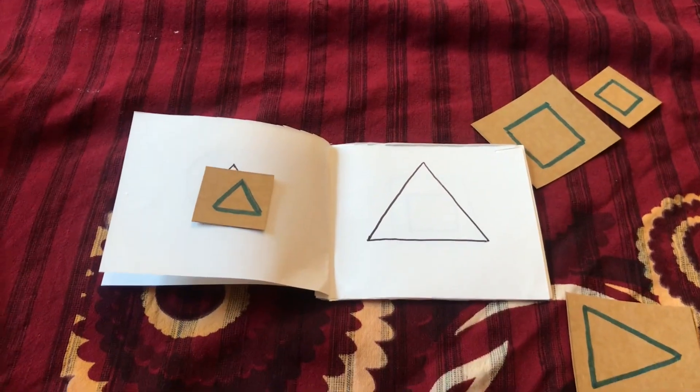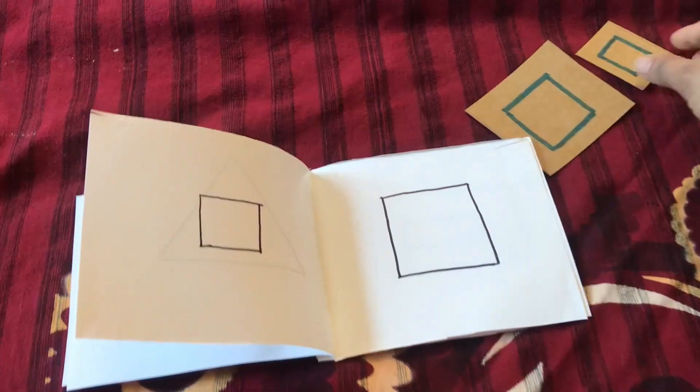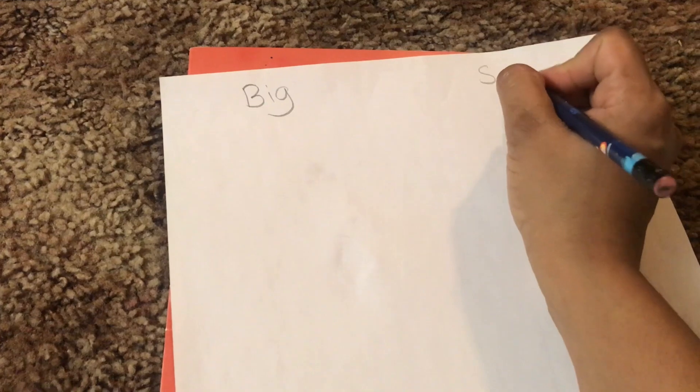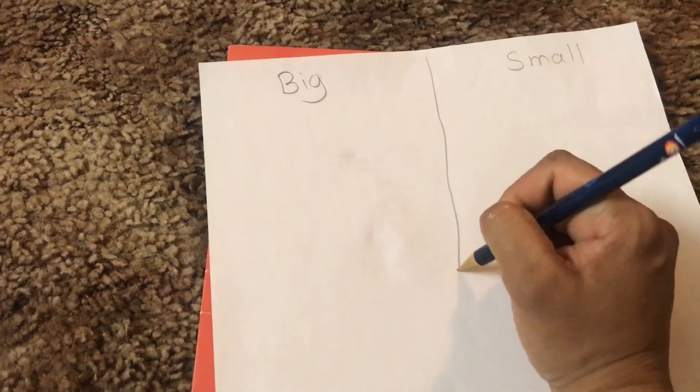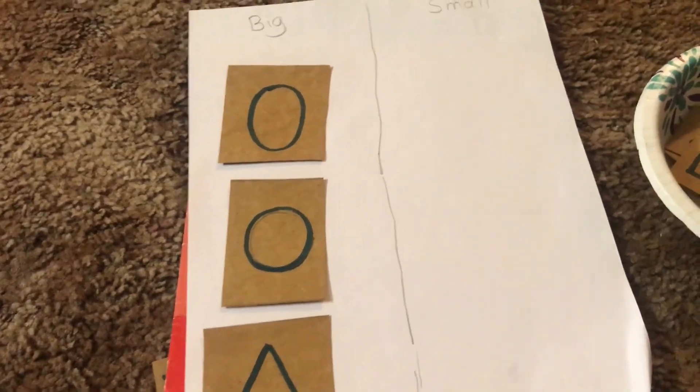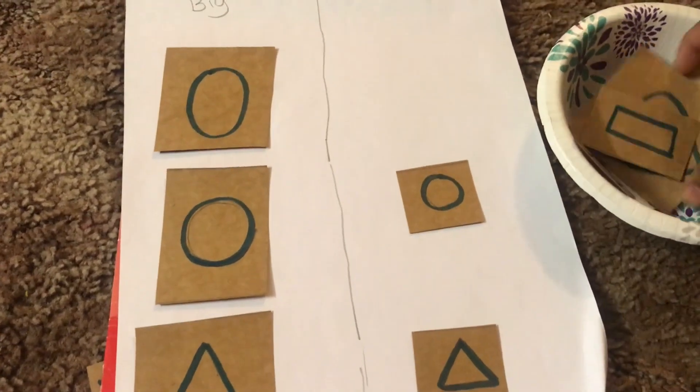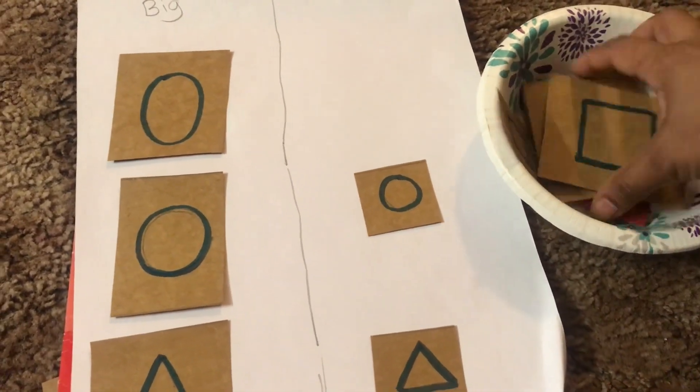Another way of using the same cards is to take a plain white paper and divide it into two columns. Label one column as big and label another column as small. You can simply arrange big cards in a big row and ask learners to match the smaller version of the same shape.